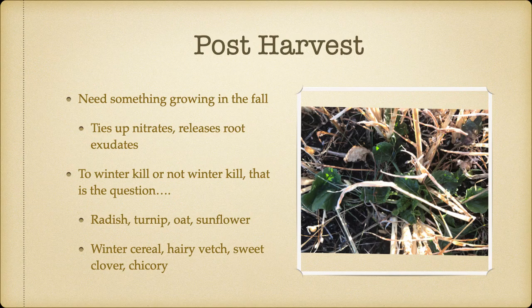Tying up nitrates — and the other neat thing is when we have that green plant in the fall, it's still releasing root exudates, which is still feeding our soil biology. The big question when dealing with post-harvest cover crops is: do we want it to winter kill or not? If you want to winter kill, using radishes, turnips, oats, and sunflowers is a real nice mix to get you green right up until snow flies. If you want it to overwinter and then plant green into it, use winter cereals, hairy vetch, sweet clover, and chicory. If you are going to be growing canola in the next three years, do not grow hairy vetch because it is naturally resistant to glyphosate, glufosinate, and your group twos. It also has about 30% hard seeds, so with that one planting you may see plants come up in the next couple of years.